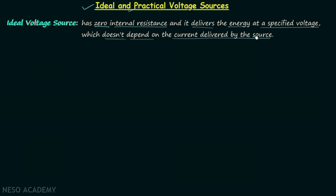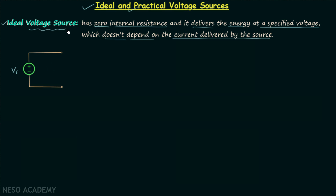This is how we define an ideal voltage source, and now we will try to understand what we mean by this statement. A voltage source has an internal voltage Vs connected in series with the internal resistance Rs. In the case of an ideal voltage source, Rs is equal to zero, so there is no source resistance — we only have Vs. The specified voltage is the voltage across the two terminals, which we call V, and the current delivered by the source is I.